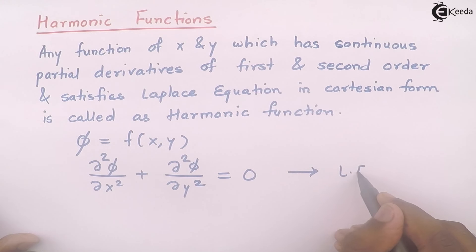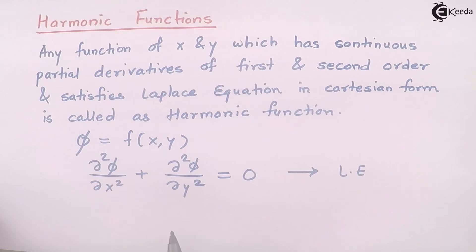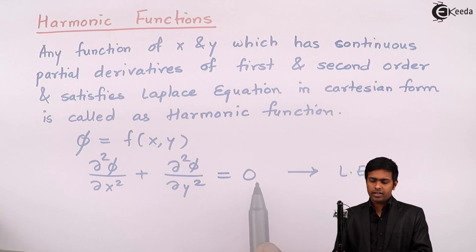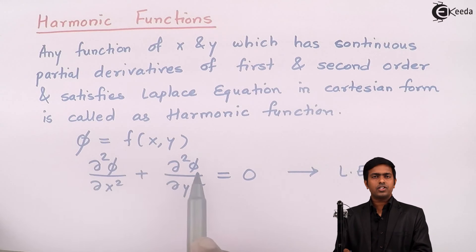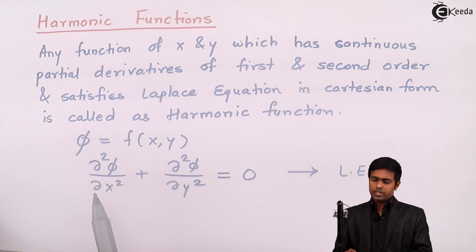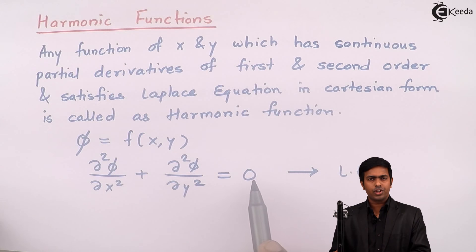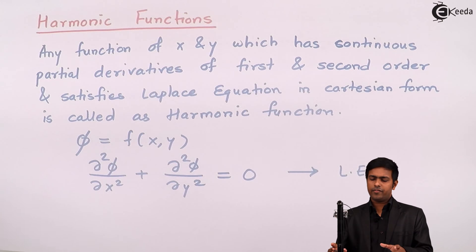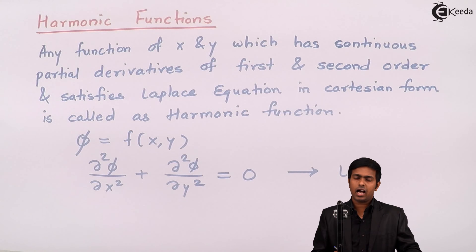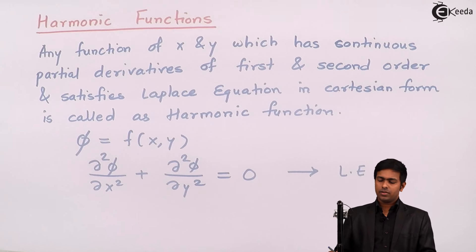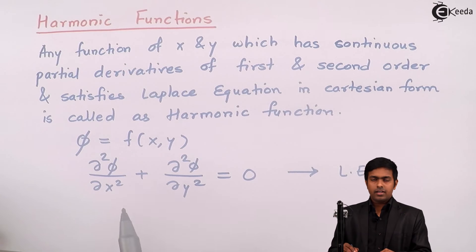If this Laplace equation is satisfied — that is, if the sum of these two second-order terms equals zero — then we say that phi is a harmonic function.